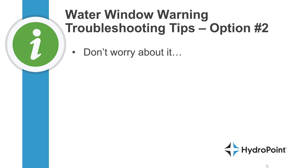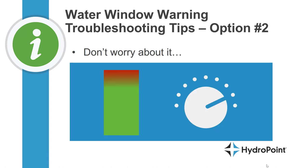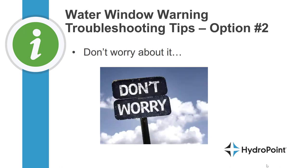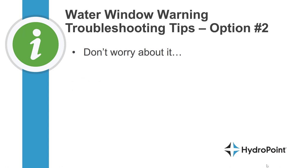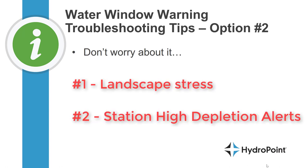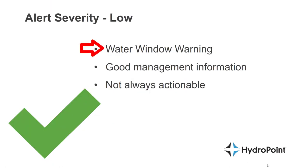Once you've given your programs all the time they're allowed, if you're still getting water window warnings, there's something to be said for not worrying about it. Remember that WeatherTrack is dynamically adjusting to keep your landscape healthy and will do its best to lay down the irrigation your landscape needs. There are many times you should not worry about it until you have evidence of larger issues like landscape stress or station high-depletion alerts. That's why the water window warning has a low alert severity — sometimes this is good management information but it's not always actionable. If you've given the controller all the time your restrictions will allow, a water window alert is just something that managers are going to have to get used to through the heat of summer.